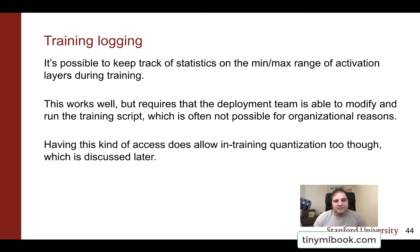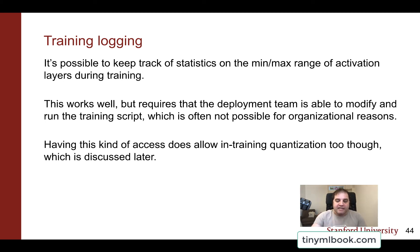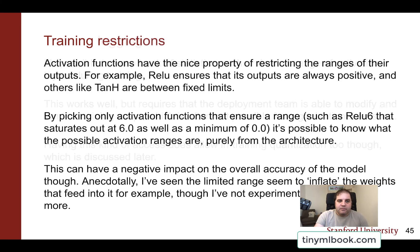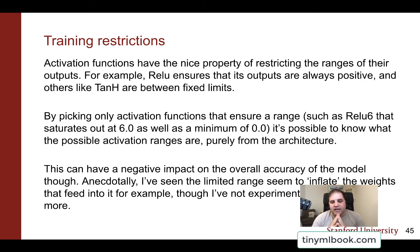But if this is possible, it's really nice — it does allow some fine-tuning of the model so that it works better and is more accurate with quantization. You can also put restrictions into your training. For example, you can say: I've got ReLU, which makes sure that no activation values are below zero. Let's try something like ReLU6, which maxes out activation values at the real number of six. Then you know ahead of time what the possible activation ranges are and that they're quite constrained, just from the architecture. Anecdotally, I have seen this kind of approach have some slightly odd results and make it harder to achieve overall accuracy, because intuitively the limited range seems to push the weights to compensate.